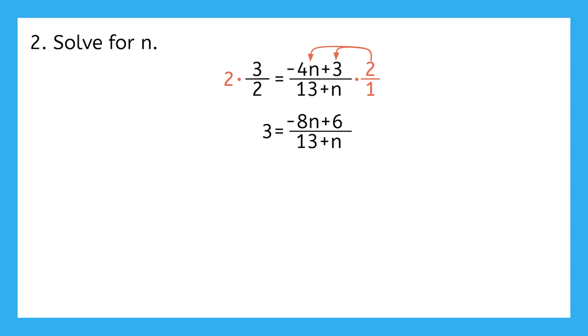Now I'll tackle the other denominator. How can I get rid of that 13 plus n on the bottom of this fraction? Yep, I can multiply both sides by that whole 13 plus n, and I'm going to put it in parentheses when I multiply since it has two terms in it. On the right, that will cancel, leaving just negative 8n plus 6. On the left, since this whole expression is being multiplied by 3, I'll just distribute the 3 to get 39 plus 3n.